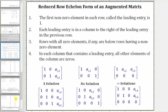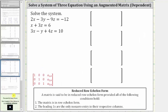So going back to our example, let's first write the augmented matrix. Looking at the first equation, the coefficients are two, negative three, negative nine, and the constant is negative 12, giving us the first row: two, negative three, negative nine, negative 12.